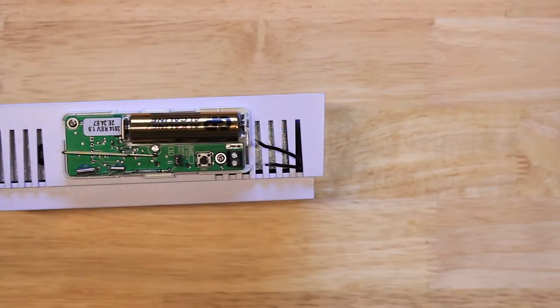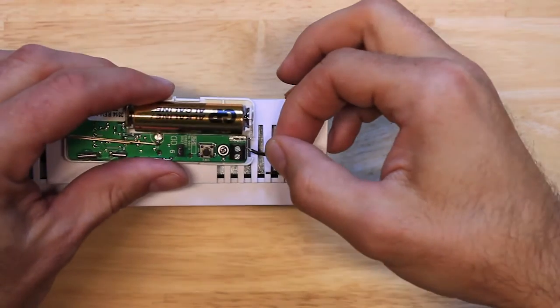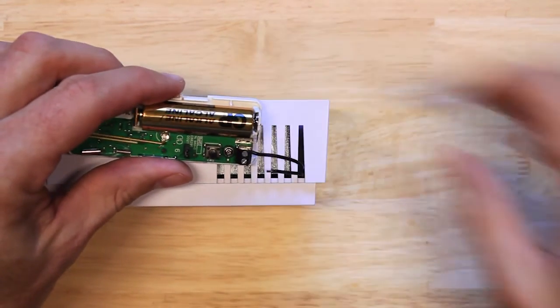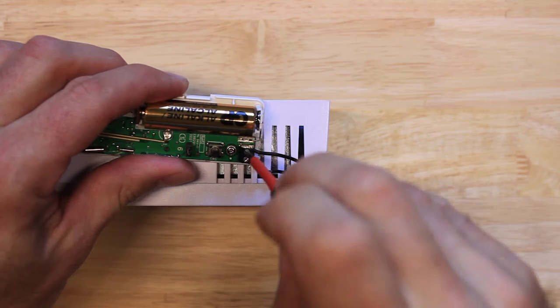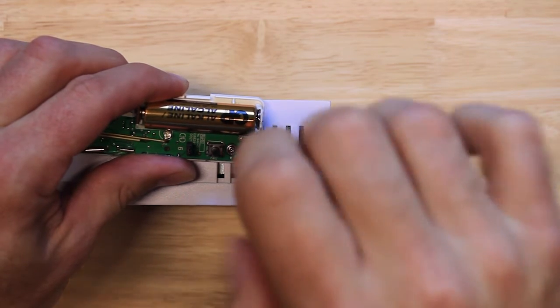So with the sensor cover off, open up your screw terminals for your wires and slide the wires in and tighten down your terminals. Once you're done, snap the cover back on.